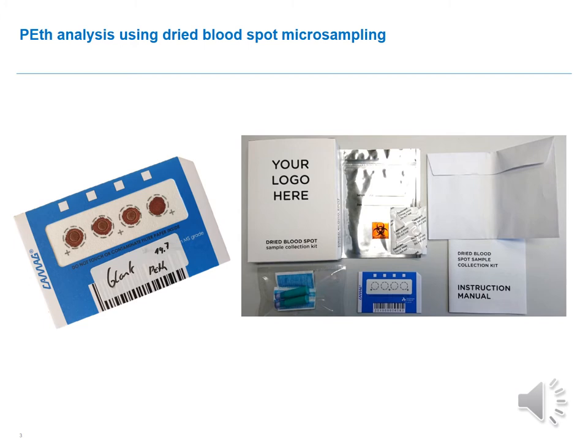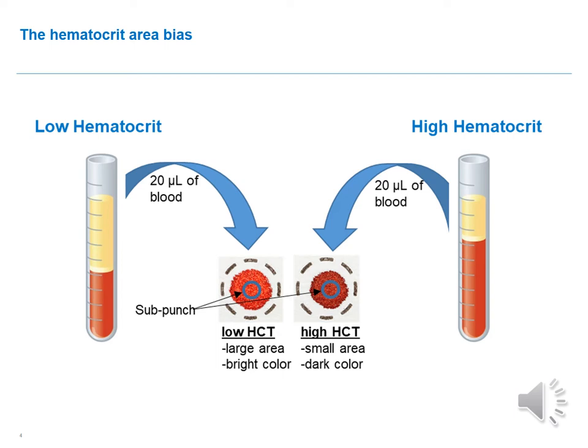When it comes to dry blood spot analysis, we have a hematocrit area bias. This means that dependent on the hematocrit content — the red blood cell content of the blood — a different spot area results from the same amount of blood. If we have a low hematocrit, a large area and a bright colored spot is generally formed. With a high hematocrit, the blood is not as liquid, so it does not spread as wide and only a small area, typically recognized by a somewhat darker color, is formed.